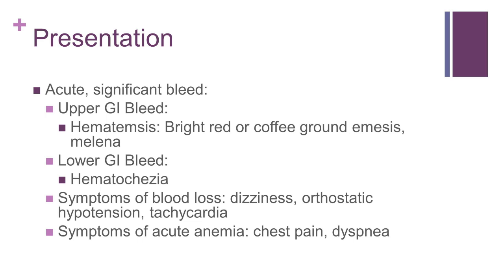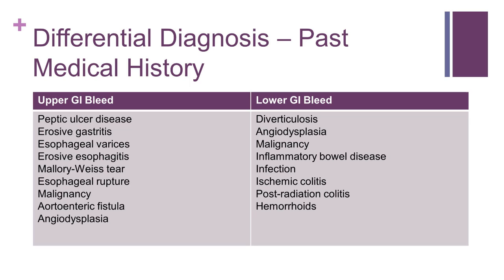Some patients, particularly the elderly or those with coronary artery disease, may develop symptoms from the acute anemia, including angina and shortness of breath. As you can see from this table, the differential diagnosis of upper and lower GI bleeding can be broad, so obtaining a past medical history can help you narrow your search.